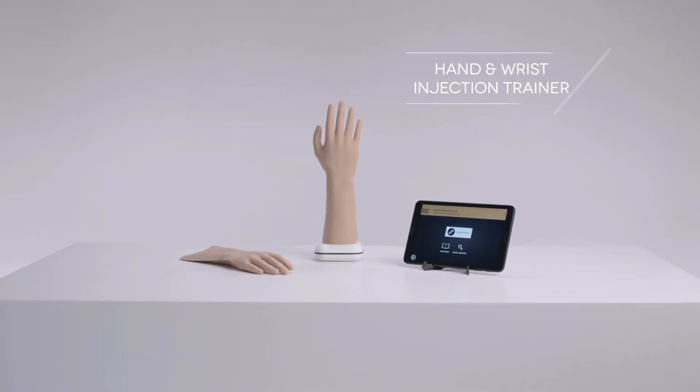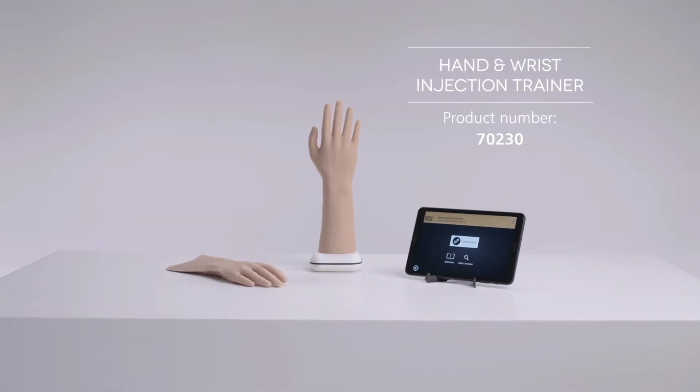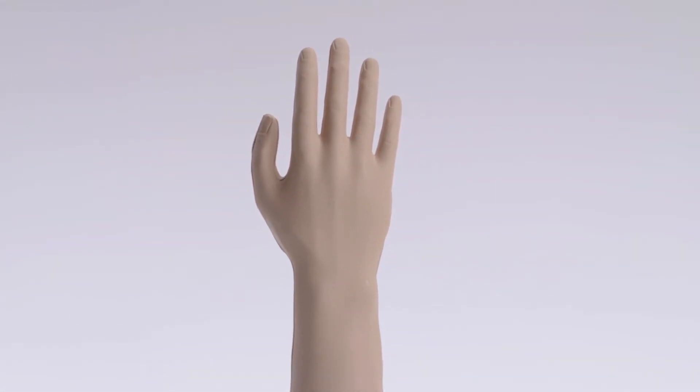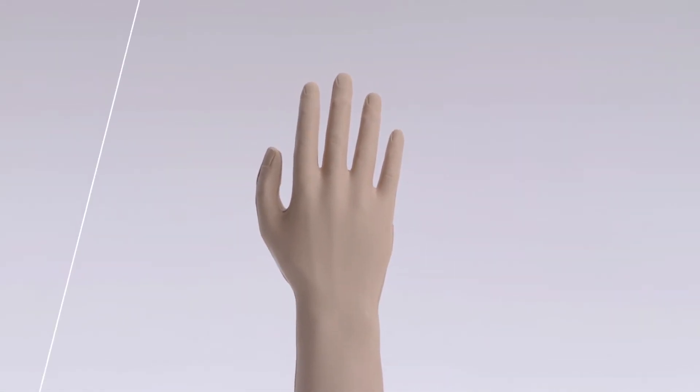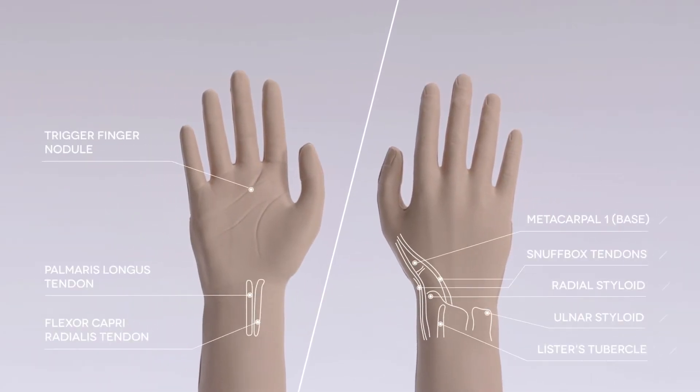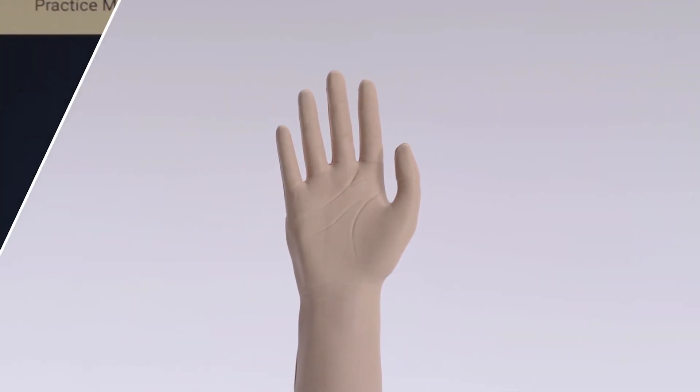This is the Limbs and Things Hand and Wrist Injection Trainer with Companion App. It is an anatomically accurate right hand that provides a realistic training and teaching platform for postgraduate learning in both landmark identification and injections into the five most common sites.